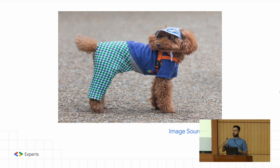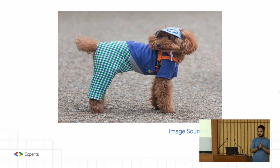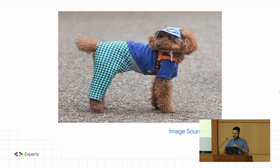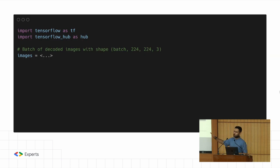I'll quickly start with a simple example. How many of you can tell me which dog breed this is? Someone said poodle — poodle is about 50% correct. There's something before that as well. I'll let a model tell me which particular dog breed this is.